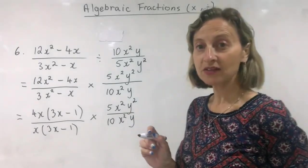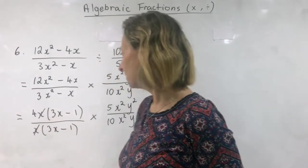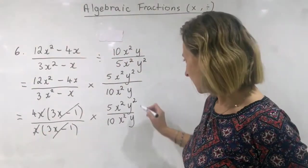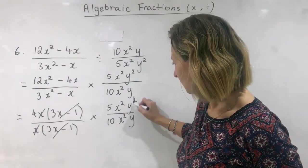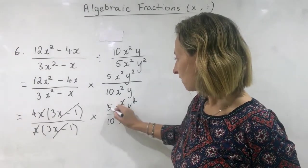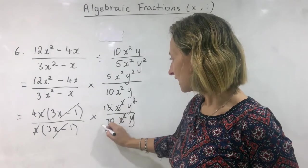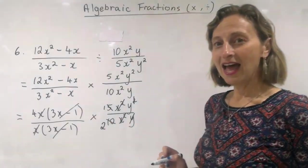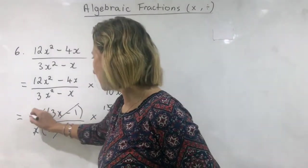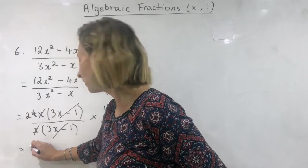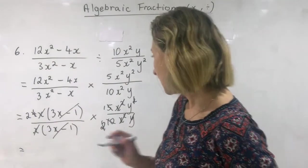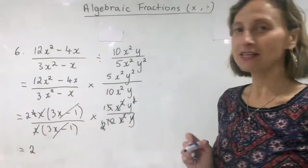Now I can cancel. I have an x on the top and an x on the bottom. 3x minus 1 on the top and 3x minus 1 on the bottom. Here I have two y's and one y, so one of those will cancel. x squared and x squared cancel. 5 into 5 goes once, 5 into 10 goes twice. If you spot that the two goes into the four, that's great. What am I left with? I have the two on the top and nothing else on the bottom, so the answer becomes two.